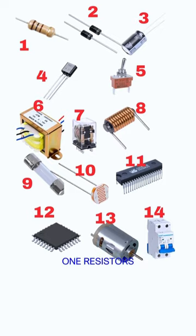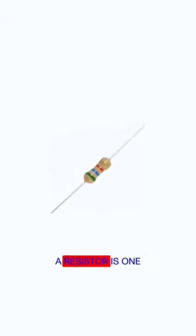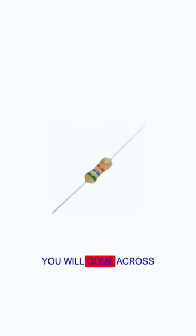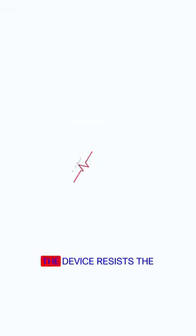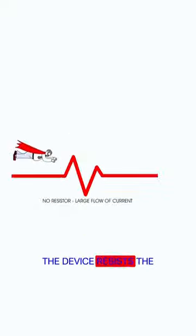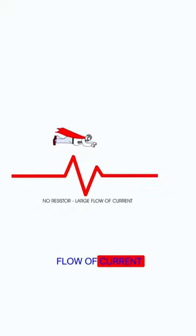1. Resistors. A resistor is one of the components you will come across in an integrated circuit. Like the name suggests, the device resists the flow of current.